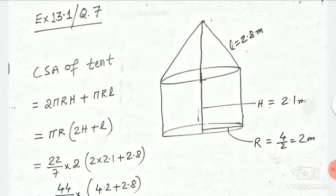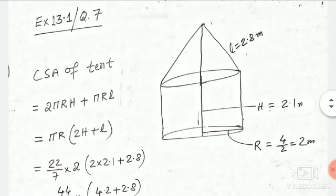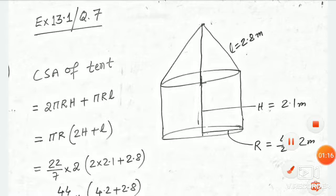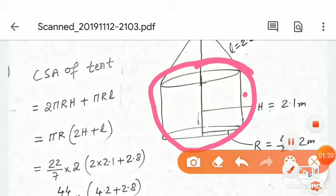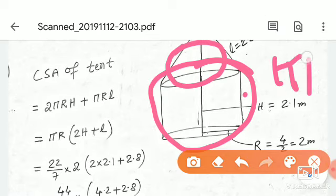That is the curved surface area of the tent: 2πRH plus πRL, equals πR times 2H plus L.